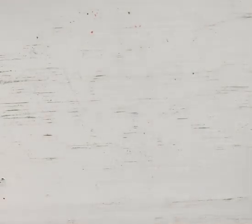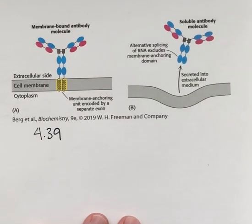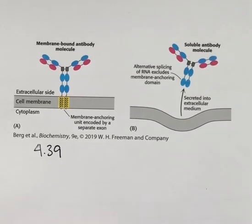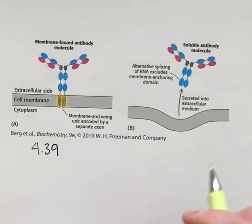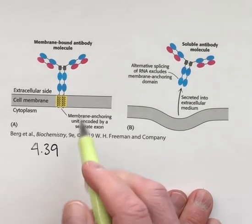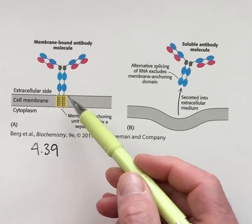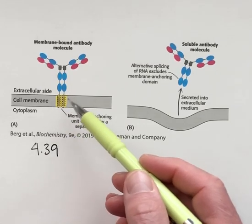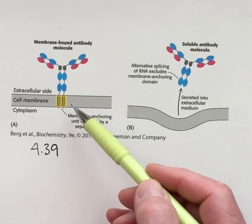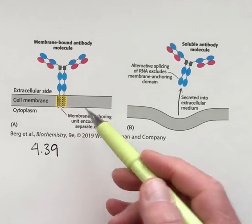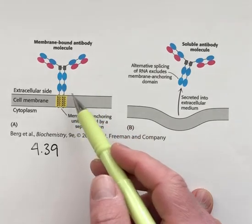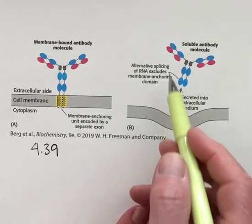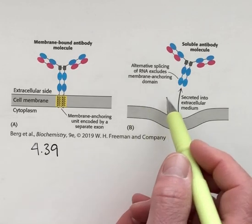Another reason to care about introns and intron removal has to do with alternate splicing. So the same gene, in this case for the production of antibodies, can make two forms of the antibody. One where this membrane anchor is attached, therefore the antibody stays at the cell surface of the immune cell that's making this antibody.